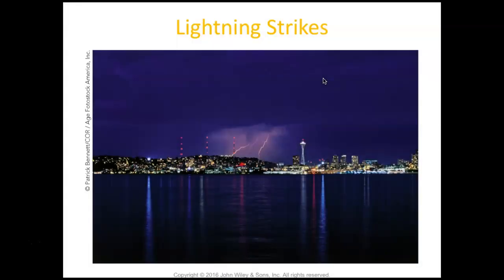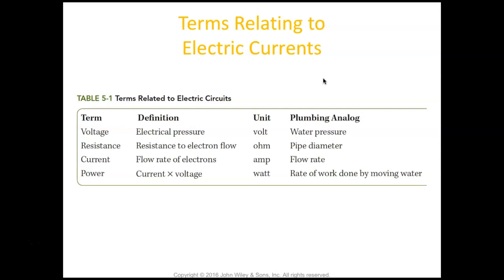We see things like lightning strikes happening all the time, where the negative particles that are circulating in the atmosphere get attracted to positive particles on the ground. They shoot up to meet each other, and that's how lightning strikes happen. Here are some more terms relating to electric currents. Voltage, the unit volt, it's like if you were to describe electrical pressure, it would be like water pressure. Resistance, in Ohms, it's like how large the diameter of the pipe is. The current, flow rate of electrons, it's like the flow rate, basically the current of the water as well. Power is current times the voltage, measured in watts. And it's basically like the rate of work done by moving water, like perhaps water moving a propeller. So just some terms to be familiar with, nothing like I would really want to test you on, but just things to start getting familiar with.